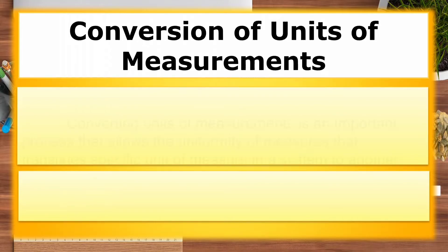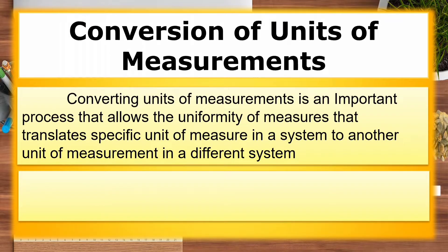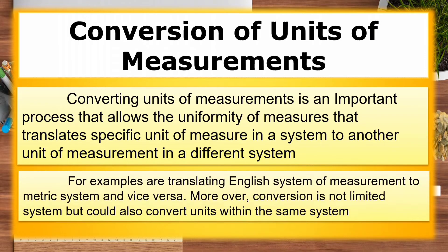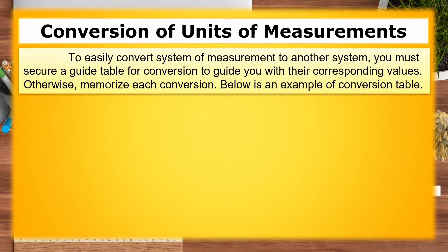Conversion of Units of Measurements. Converting units of measurement is an important process that allows the uniformity of measures — it translates a specific unit of measure in one system to another unit of measurement in a different system. Examples include translating English system of measurement to metric system and vice versa. Moreover, conversion is not limited between systems but could also convert units within the same system. To easily convert, you must secure a guide table for conversion to guide you with their corresponding values; otherwise, memorize each conversion.